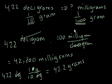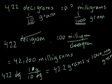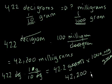And now we could just go from grams to milligrams. Well, that's an easy one. 1 gram is equal to 1,000 milligrams. So we could say times 1,000 milligram per gram. The grams cancel out. And we're left with 42,200 milligrams. Right? 42.2 times 1,000.